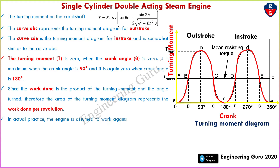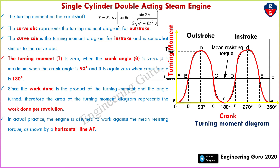In actual practice, engineers assume work against the mean resisting torque, as shown by the horizontal line AF. In this diagram we can see this AF line, which is called the mean resistance torque line. Above this T-mean resistance torque area — marked as B, b, C — it represents the excess energy stored in the flywheel.